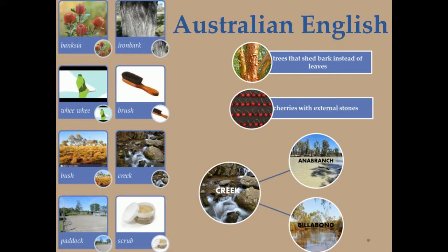The words brush, bush, creek, paddock, and scrub acquired wider senses. A creek leading out of a river and entering it again downstream was called an anastomosing branch, or an anabranch, whereas a creek coming to a dead end was called by its native name, a billabong.